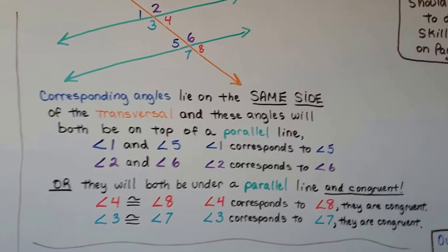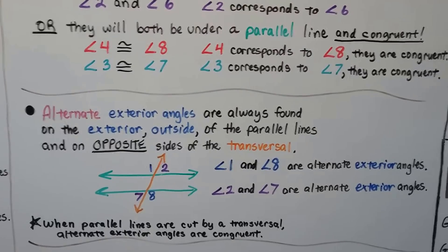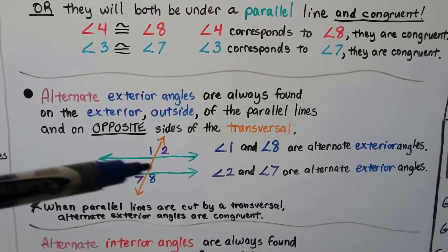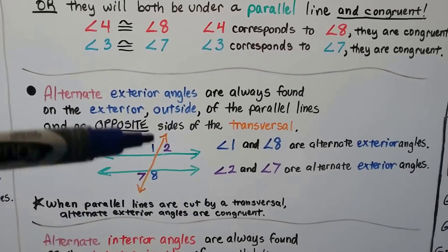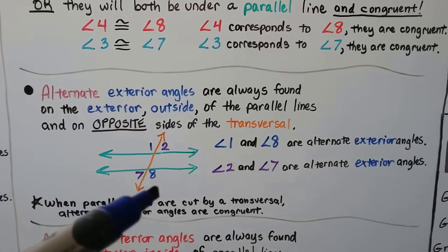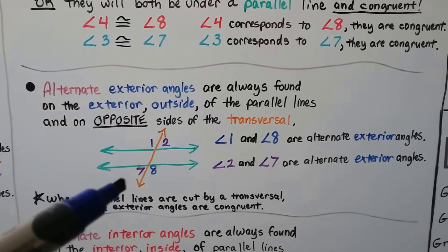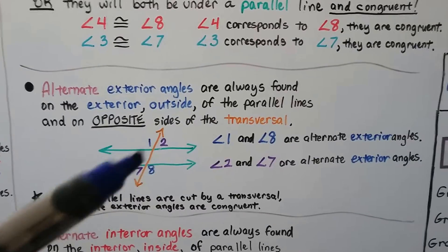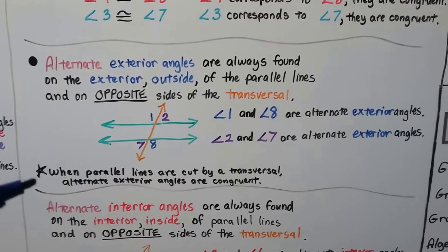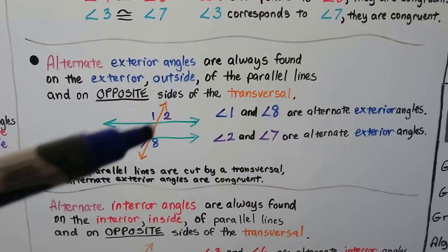You might want to write that in your notes — it is in the book. Alternate exterior angles are always found on the exterior, the outside of the parallel lines, and they're on opposite sides of the transversal. Angle one is an alternate exterior angle to angle eight — opposite sides, on the outside. Angle two is an alternate exterior angle to angle seven. There's actually a theorem that says when parallel lines are cut by a transversal, alternate exterior angles are congruent. So one and eight are congruent and two and seven are congruent.